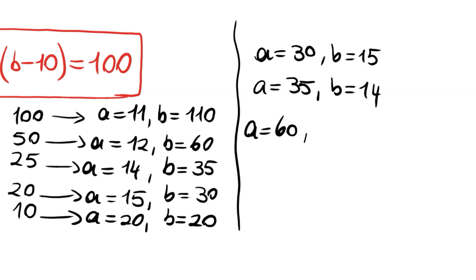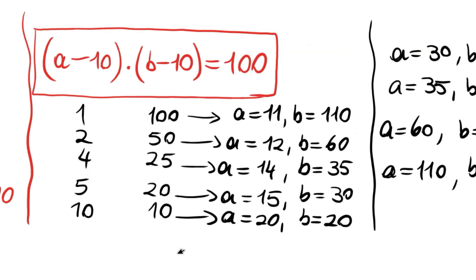A may be 60, b may be 12. And a may be equal to 110, and b may be equal to 11. These nine solutions are our positive integer solutions.